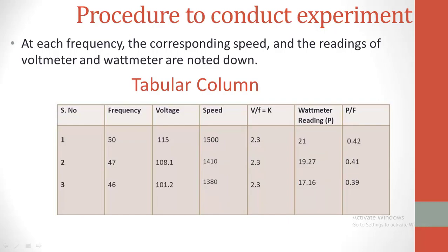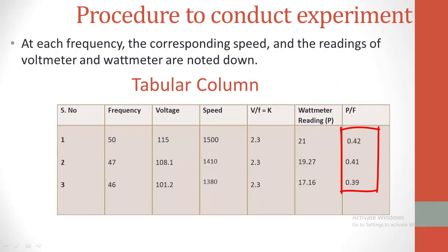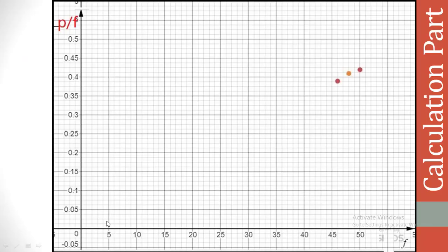Now take the ratio of P/F, that is the wattmeter reading divided by frequency: 0.42, 0.49, and 0.39. Now you need to draw a graph of frequency versus P/F. On the x-axis, we have taken the frequency, and on the y-axis, we have taken the ratio of P/F.